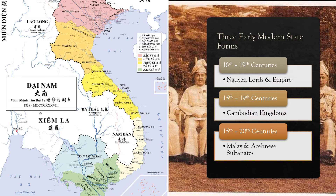We're also going to cover three early modern state forms, especially from the 16th to 19th century: the transition from the Nguyen lords to the Empire of Dainam, or the Nguyen Vietnam Empire. During roughly the 15th through 19th centuries, you also have rising and falling Cambodian kingdoms. Then over island Southeast Asia and peninsular Malaya, you have the Malay and Achenese sultanates, which rise and fall from the 15th through the 20th century, with Malay nobles from the sultanates pictured in the background of the slide.